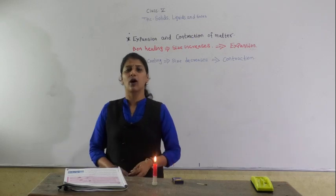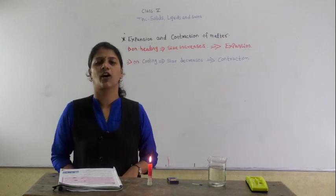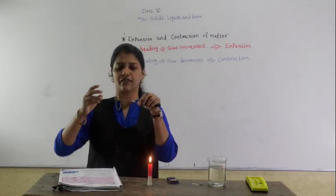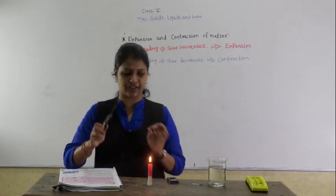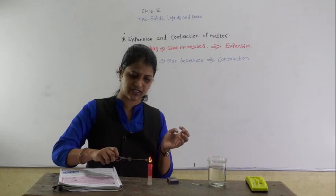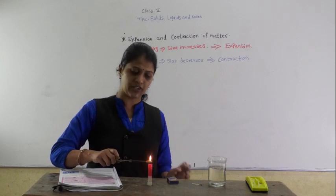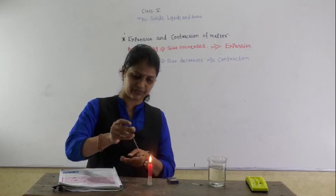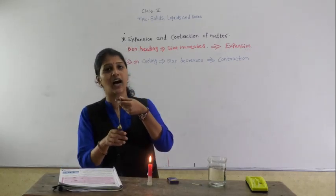In your book, one activity is given about the ring and ball. We will do the activity of expansion and contraction with a ring and ball. This is a ring and this is a ball. First, we will see whether the ball goes through the ring — the ball is not going through the ring. So you have to heat this ring. Because of the heating, the size will get increased. Once I heat this ring, the ball has gone easily through the ring.